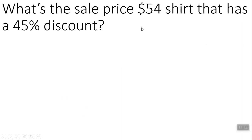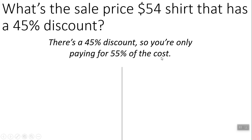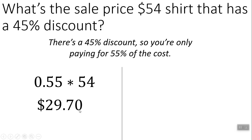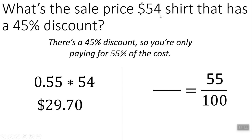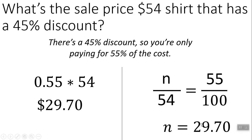What's the sale price of a $54 shirt that has a 45% discount? If you're taking off 45%, that means you're paying for 55% of the shirt. So if there's a 45% discount, you only pay for 55% of the cost — you do 55% of 54 to figure out what you're actually paying. With a proportion, you go 55 over 100, and out of $54 you compute 54 times 55 divided by 100, and you get the same answer.